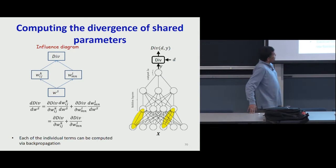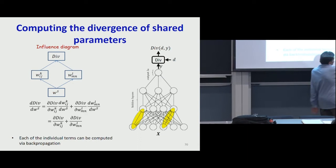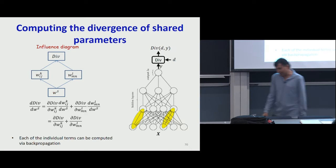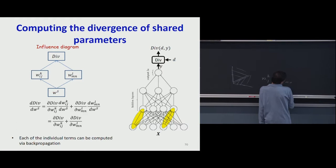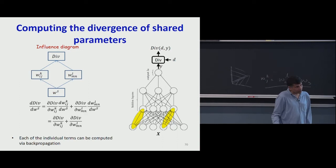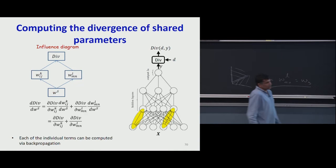Another student asks why those chain-rule terms are one. The answer: parameter sharing literally means Wijk equals WmnL equals Ws — an equality statement. So the derivative of each individual weight with respect to the shared value Ws is exactly one, by direct differentiation of an equality.